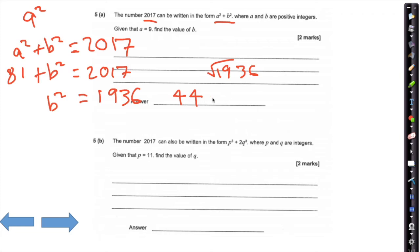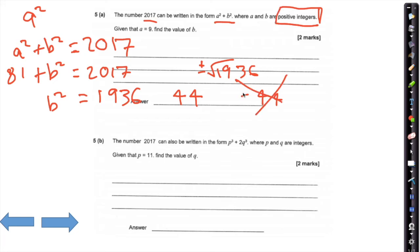Interestingly, if you did type in minus 44, that will give you the same answer, because when you square root, you can have the positive or negative square root. However, because we're talking about positive integers, you cannot write minus 44 and expect to get the mark. The only positive integer answer is 44.